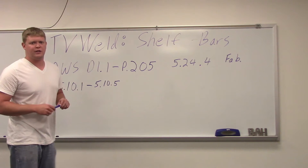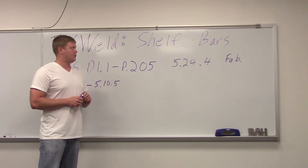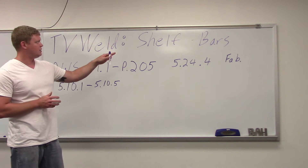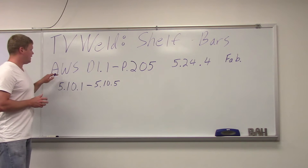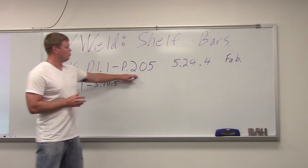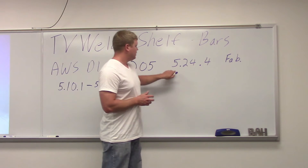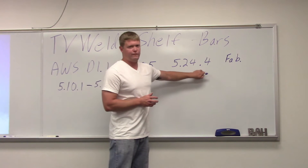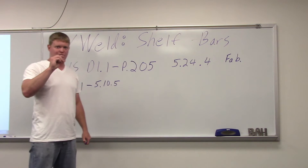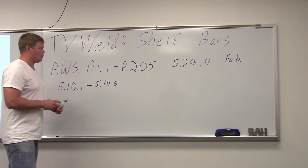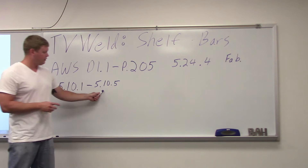What we're talking about today is shelf bars. I did a video on the D1.1 CWI exam and there were a number of questions on the CWI exam about shelf bars. I found it in AWS D1.1 on page 205. That's the section in fabrication — it's 5.24.4. That's where you're going to find this. It's just a little tiny section, and all it says about the shelf bars is refer to 5.10.1 through 5.10.5.